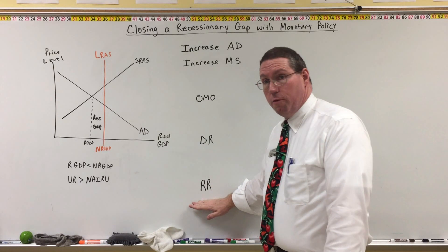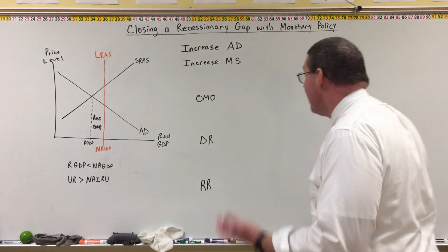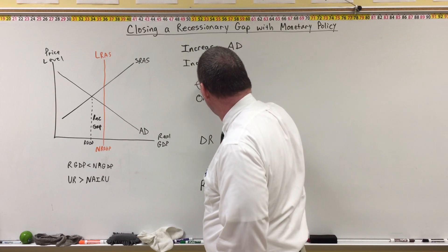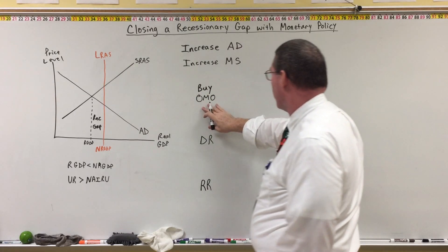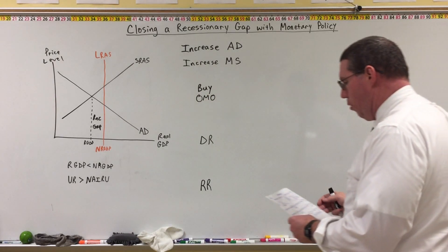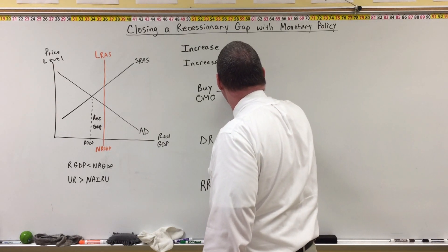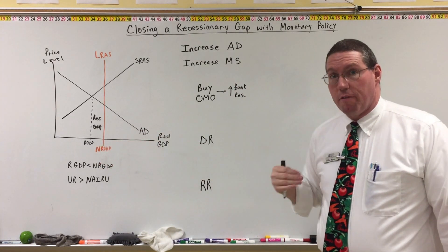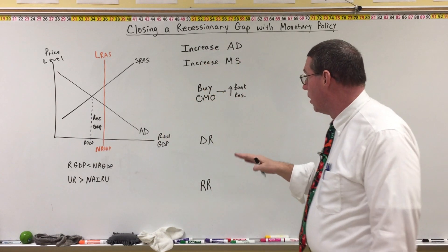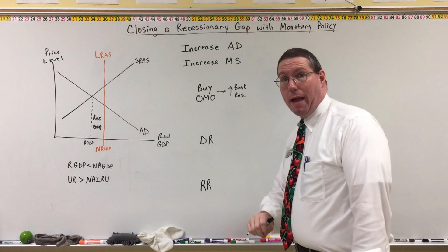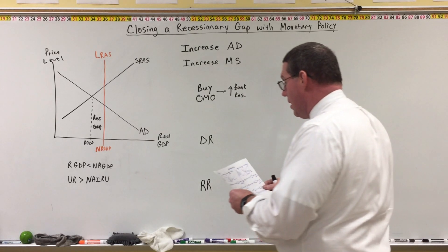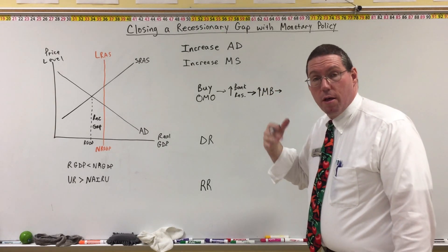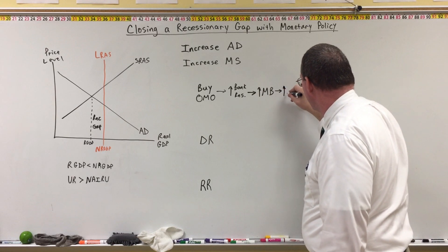If open market operations don't work, they'll move to the discount rate. If that doesn't work, they move to the reserve ratio — that's like hitting the panic button. To increase the money supply, the Fed buys government securities in the open market, which results in an increase in bank reserves. They're taking bonds out of the market and putting money into the economy by depositing it into the bank reserves of the banks selling those bonds. When bank reserves increase, that increases the monetary base, which triggers money creation and increases the money supply.